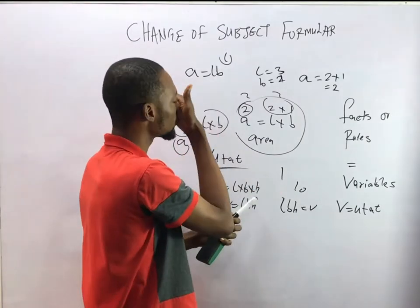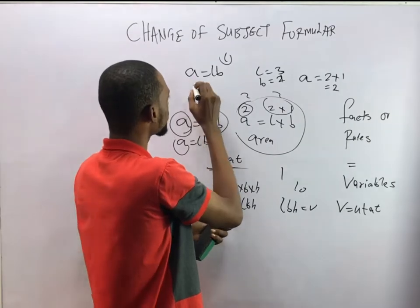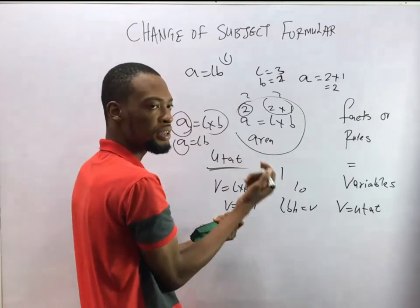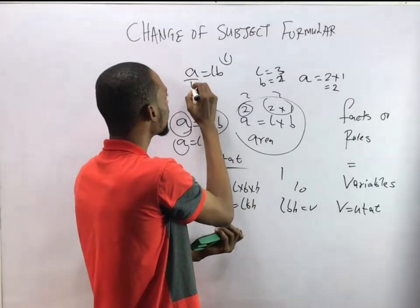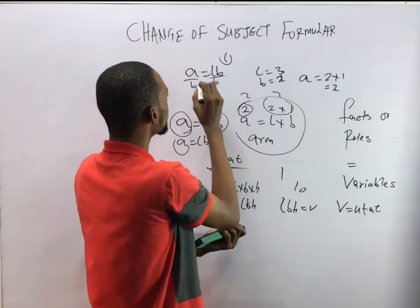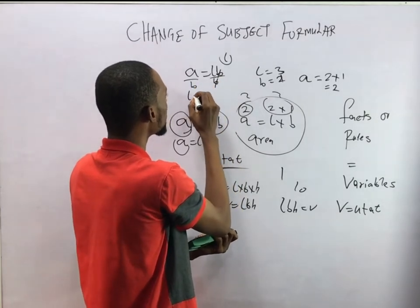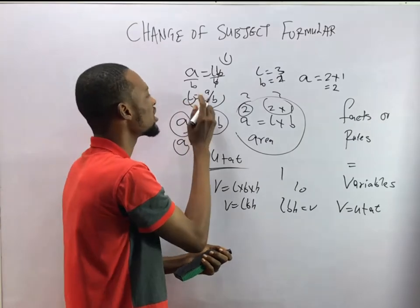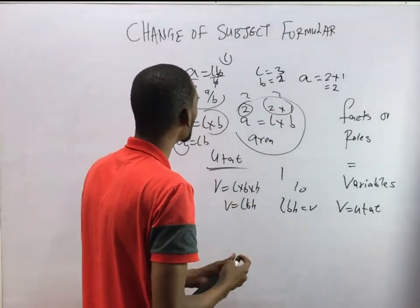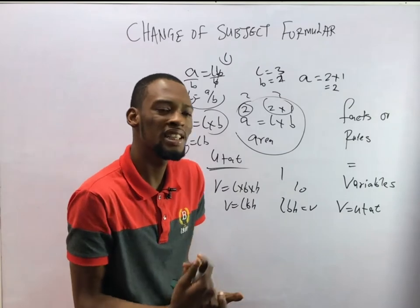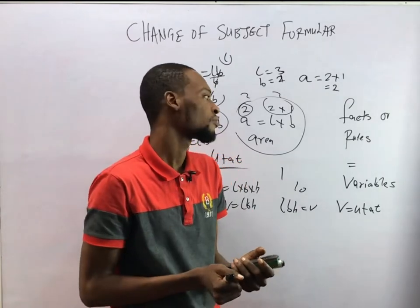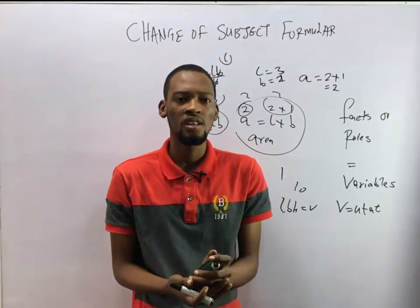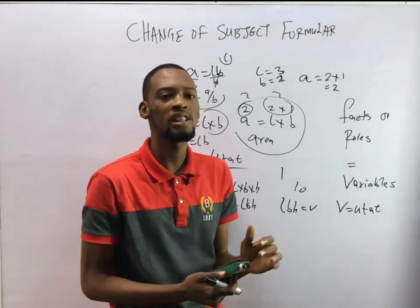To make L the subject in A equals LB, we divide both sides by B. B cancels B on the right side, leaving L equals A over B. In this case, L is alone and equals every other thing, so we've made L the subject formula.